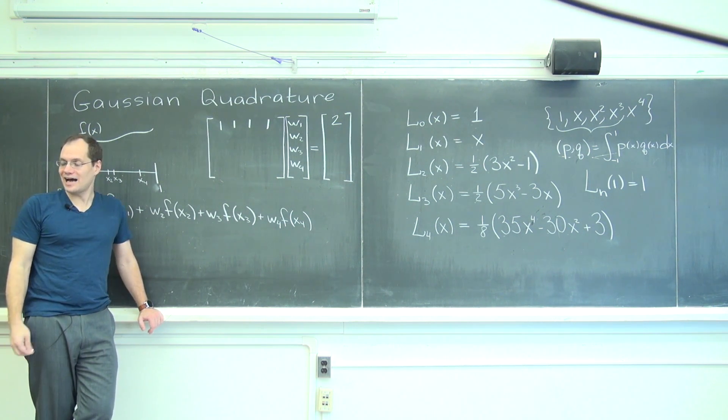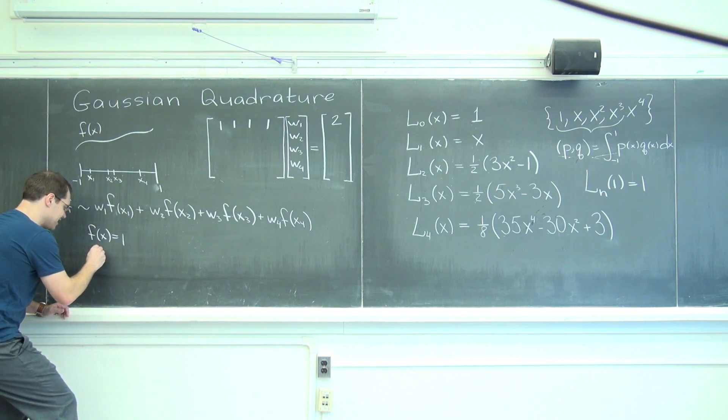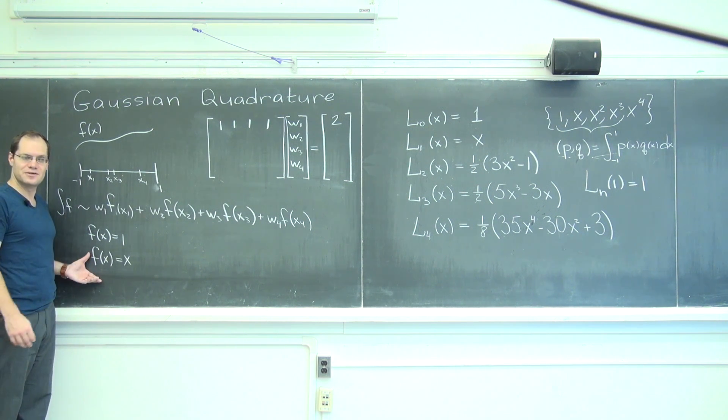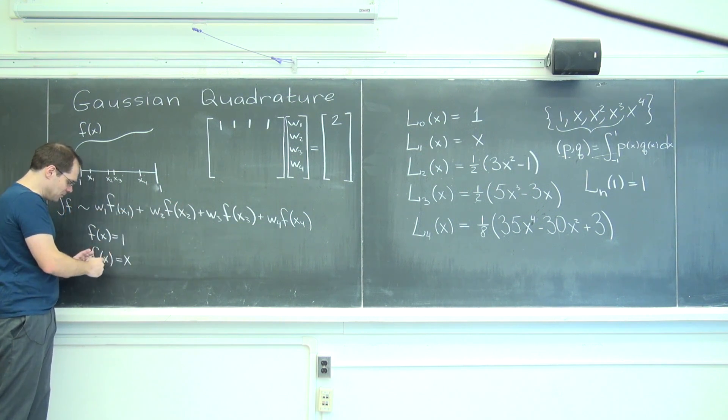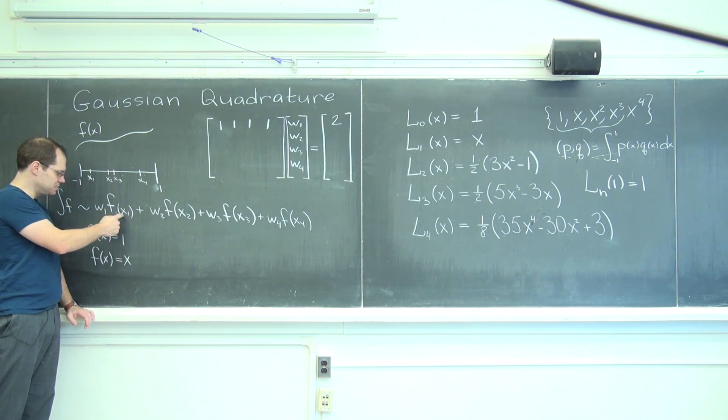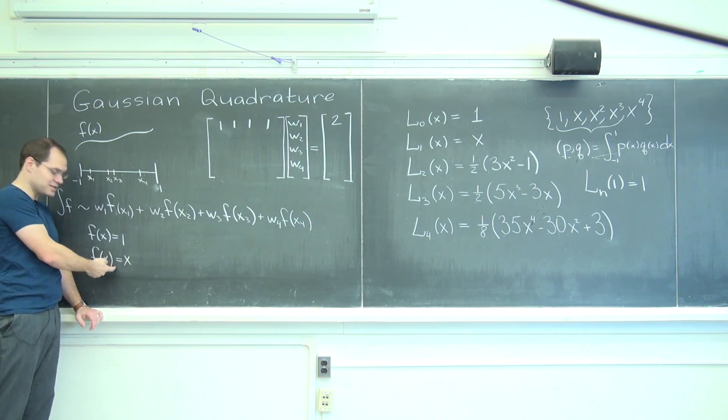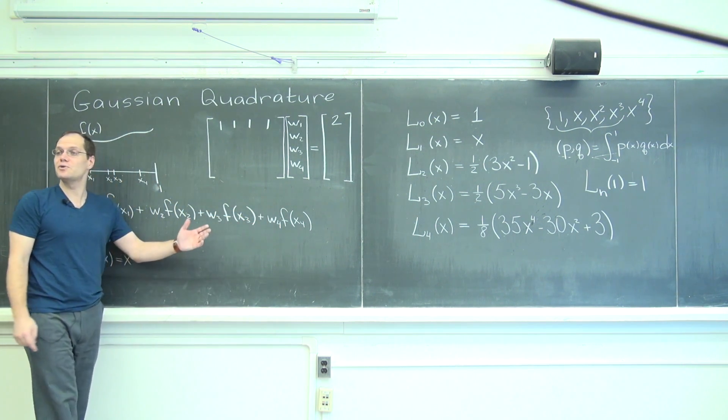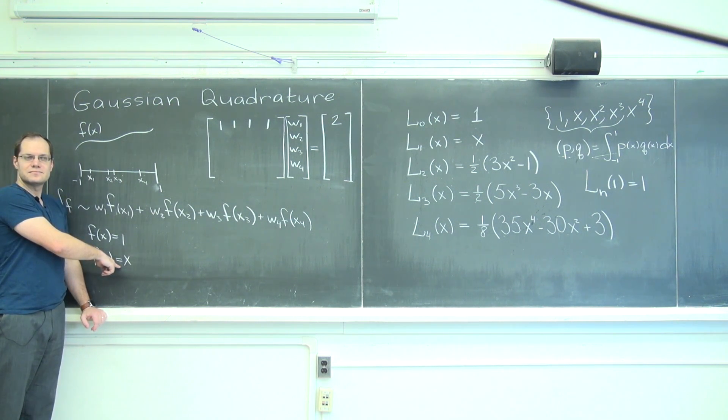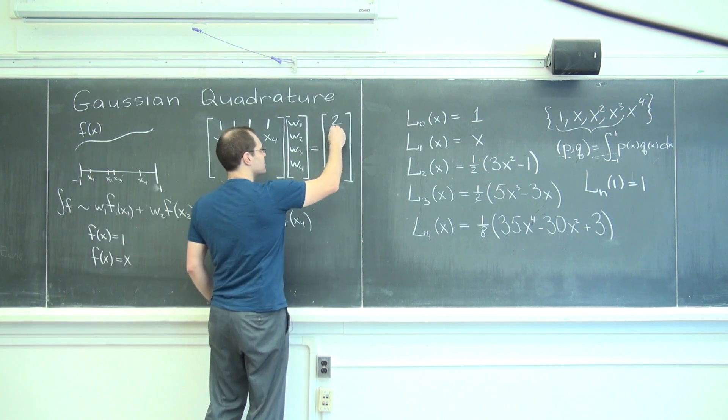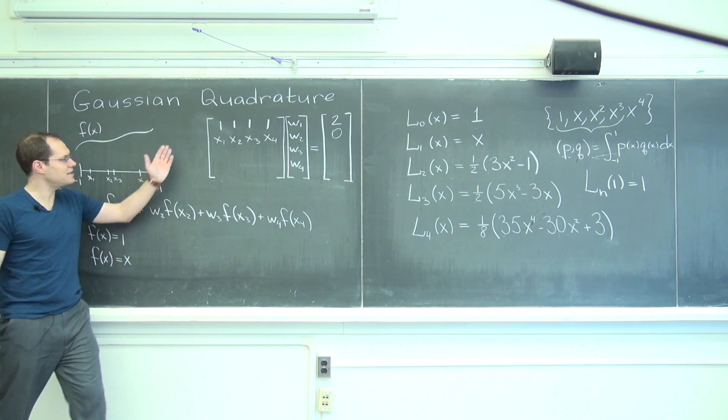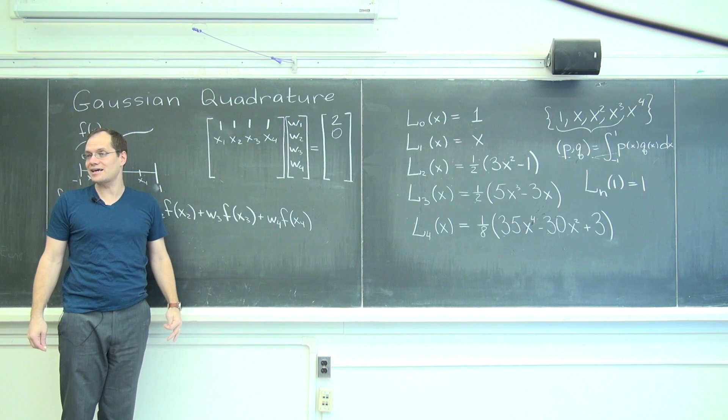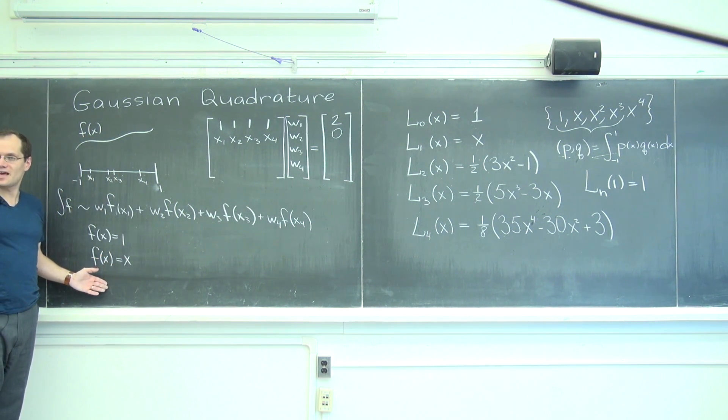Great, but I want more than that. I have the degrees of freedom to do it. I want it so that if f of x is x, I also get an exact answer. Is that too much to ask? No, not yet, because I have the degrees of freedom. So I'm plugging that in here. I'm seeing what does this scheme become when f of x equals x, and I'm seeing this becomes x1, right? Because f of x1 is x1 for this function. And so w1 x1 plus w2 x2 plus w3 x3 plus w4 x4 equals - what's the true value of the integral for this function? Zero.